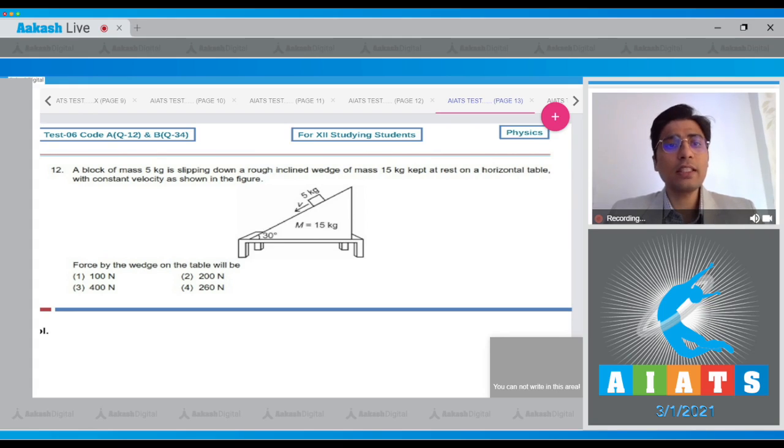If we consider the block and the wedge as a single system, there will be a total gravitational force downwards, that will be capital M plus small m into g, and there will be a normal force by the table on the wedge. Now, since the whole system is in equilibrium, that is the center of mass has no acceleration, n will be equal to capital M plus small m into g.